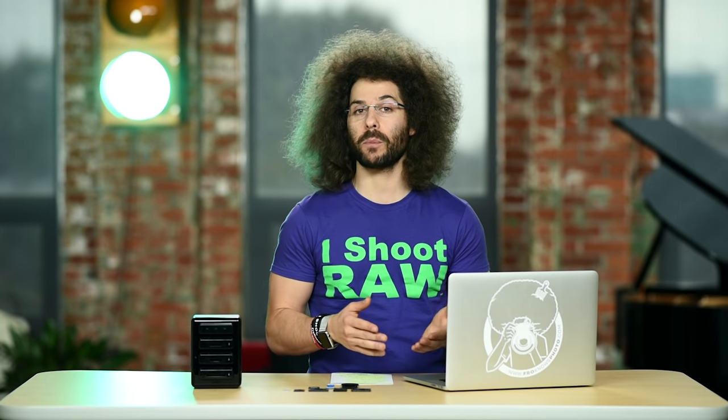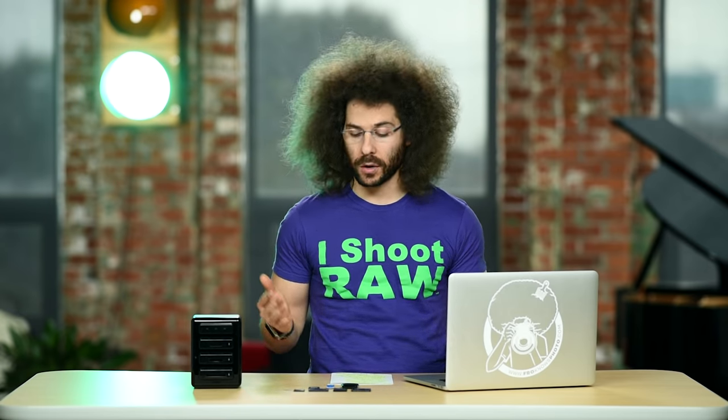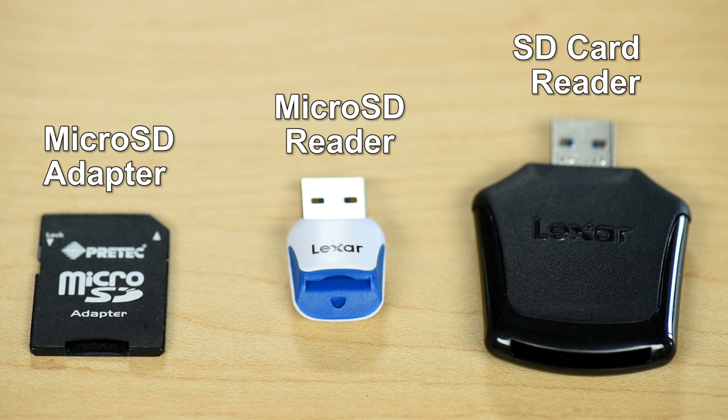Let's talk about how you transfer your memory cards to your computer. You could connect your camera directly to the computer, but I personally don't recommend that. I prefer to use card readers. For example, we have an SD adapter that takes a micro SD card, a standalone micro SD USB 3.0 card reader, and an SD card reader that's also USB 3.0. Don't cheap out and buy an older USB 2.0 card reader — it's much slower and won't take advantage of the read speeds of better cards.